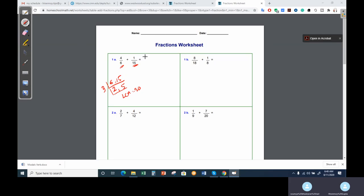What you have to do is multiply the first one by 5 to make it 30, and the second one you have to multiply by 2 to make denominator 30. You will get 20 over 30 plus 2 over 30.